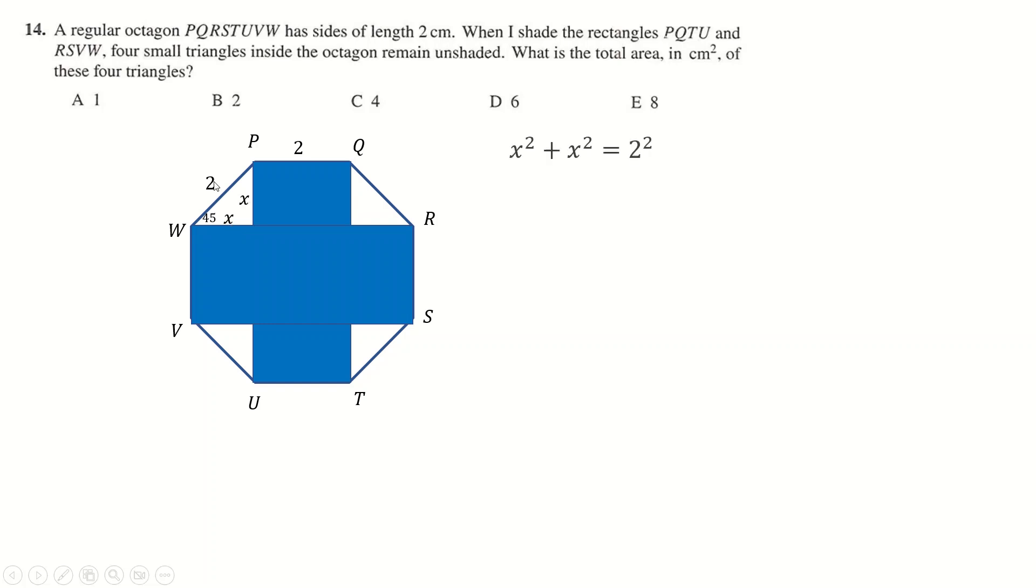So it's a right-angled isosceles triangle. This is 90. So if we call this X, we can call this X. X squared plus X squared is 2 squared. 2X squared is 4 divided by 2 square root. And so you've got four triangles, all sides root 2. So the area here is going to be 4 times 1/2 times root 2 times root 2. That's 2. That cancels. Answer is 4.